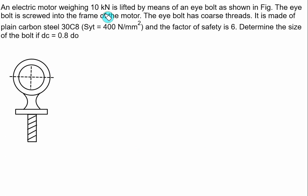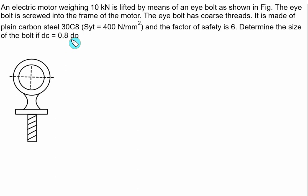An electric motor weighing 10 kN is lifted by means of an eye bolt screwed into the frame of the motor. The eye bolt has a coarse thread, made of plain carbon steel 30C8 with Syt = 400 MPa and factor of safety = 6. Determine the size of the bolt if core diameter = 0.8 × nominal diameter. The weight of 10 kN acts downward, putting the bolt in tension.